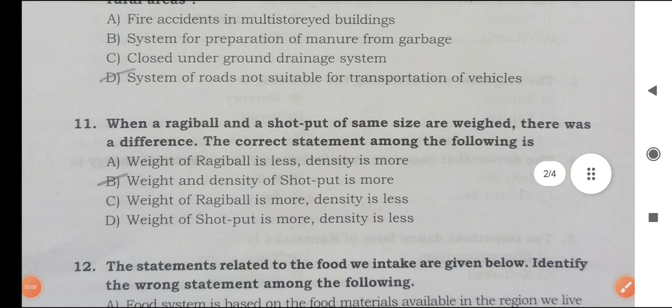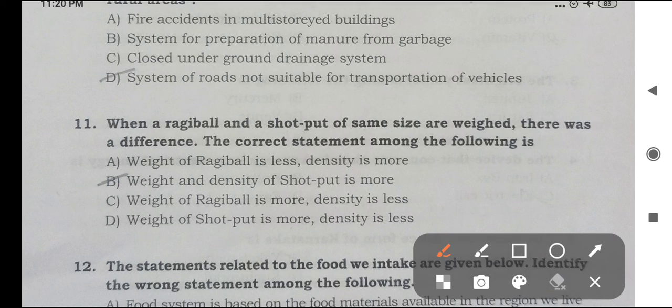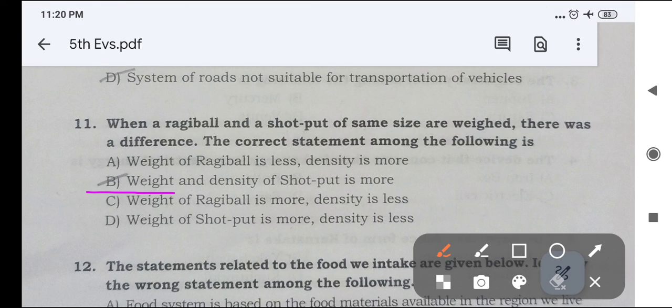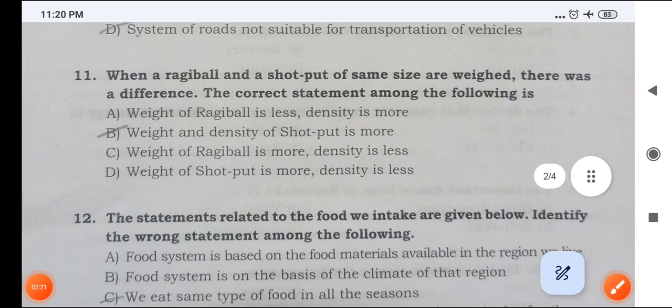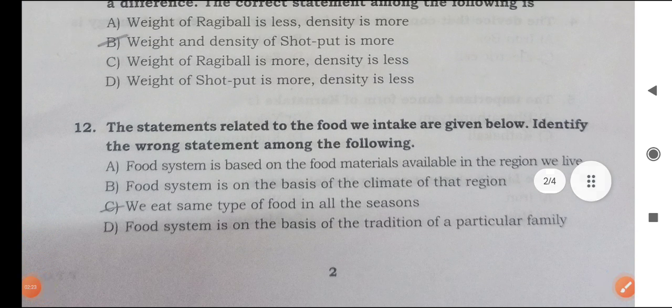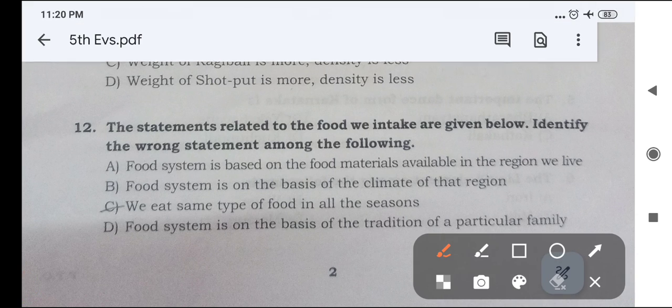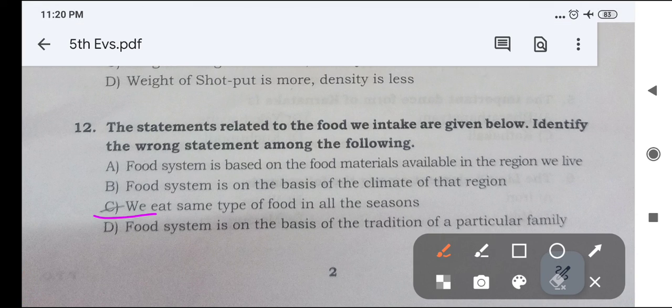Next, when a ragi ball and a shot put of same size are weighed, there was a difference. The correct statement among the following is B option, weight and density of shot put is more. Next, the statements related to the food we intake are given below. Identify the wrong statement among the following. Wrong statement is C option, we eat same type of food in all the seasons.